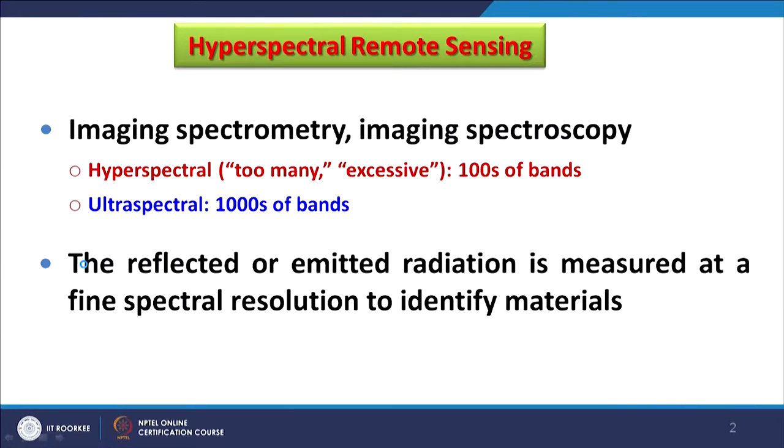Whatever reflected or emitted radiation can be measured — recall that since 1972 when we started Landsat MSS, we had just 4 bands covering a large part of the EM spectrum including visible and near infrared. Those 4 bands were quite broad compared to today's reference. These bands were continuous at that time for Landsat MSS but very wide bands were there. Now we are talking about very fine spectral resolution rather than relatively coarser resolution, and not only very fine bands but also continuous coverage of that part of the EM spectrum.